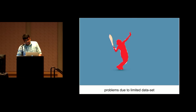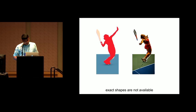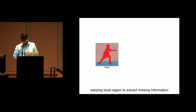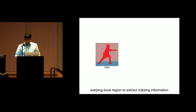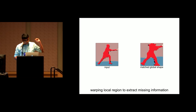Simple shape-based matching will fail if we do not find an exact match. We studied this problem closely. Given an input shape on the left, the matched global shape is on the right. We see that relevant information is available; however, strict matching does not allow us to capture it.